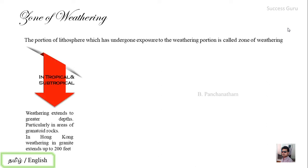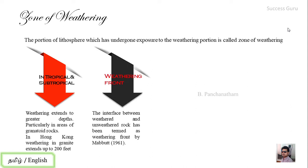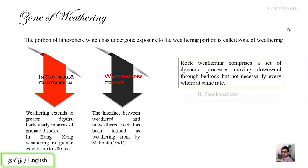One of the zones is defined by region. For example, in tropical or subtropical regions, weathering is intense. In granitic regions — such as Hong Kong, where granitic rock is exposed — the weathering profile is well developed. The third term is the weathering front, which is the boundary between weathered material and unweathered country rock. This term was named by Mabut in 1961.